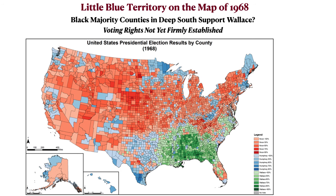At the county level, it's a pretty red map with some blue Democratic strongholds. In the South, Humphrey did much better in Texas than other states, and there was strong support for Wallace in the Deep South, though not much in South Carolina — which I'll talk about in a little while.